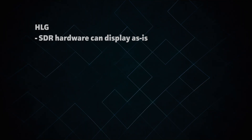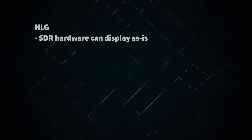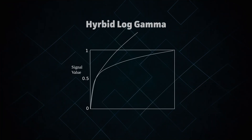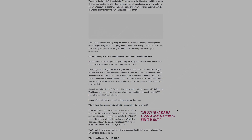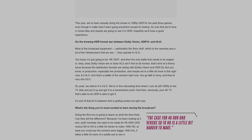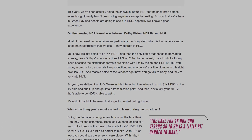An SDR display can just show this image the way it would any other, and it will look pretty normal. The display doesn't need to know that the image was encoded with HLG, so this works even with old hardware. However, an HDR display will be able to recognize the HLG signal, and it will perform a transform which reverses the logarithmic curve at the top half of the signal, essentially unpacking the highlights and allowing them to go up into the HDR range. So we have one signal that can be either SDR or HDR, depending on how it's interpreted. This makes HLG especially popular for applications like broadcast TV, where it's impractical to transmit two separate versions of the show simultaneously. You can just broadcast the HLG signal, and it will work with both SDR and HDR viewers.